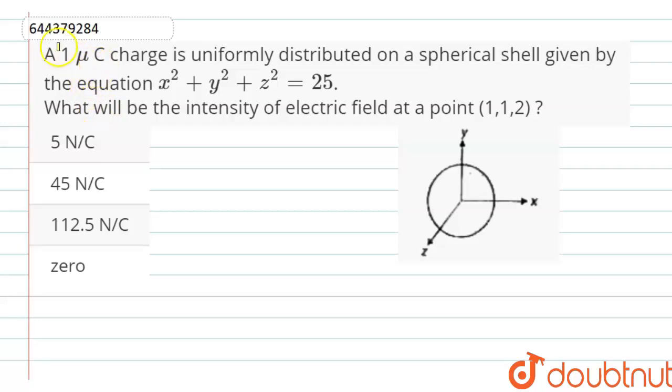Hello dear students, here the question is: a 1 micro coulomb charge is uniformly distributed on the spherical shell given by the equation x² + y² + z² = 25. What is the intensity of the electric field at point (1, 1, 2)?